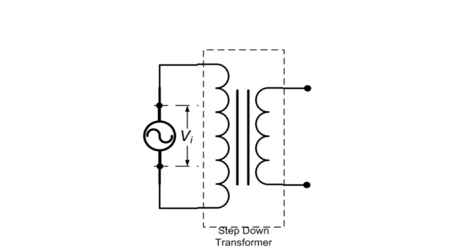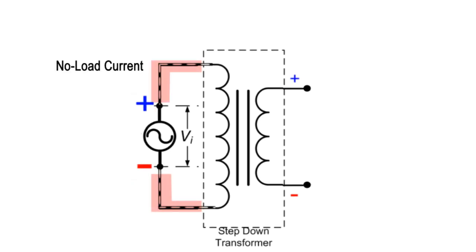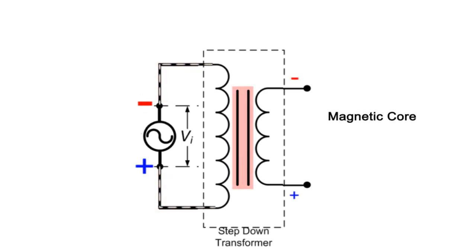When primary winding is energized by an AC supply, an alternating current starts flowing in the primary winding which in turn sets up an alternating magnetic field inside the magnetic core. This alternating magnetic field interacts with the secondary winding and induces an EMF.